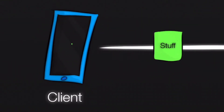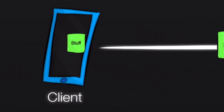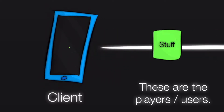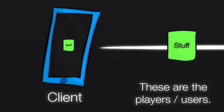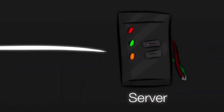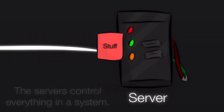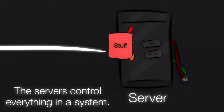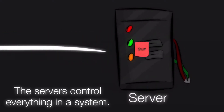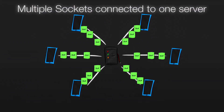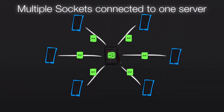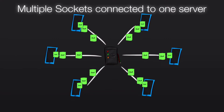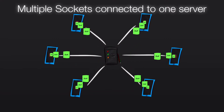Here is a client. Phones, computers, and tablets are all examples of clients — they are guests of a networking system. Here is a server. A server handles all incoming connections and interactions from clients. Servers control the networking system. Multiple sockets can connect to one server and interact with each other. A server is required for Socket.io to work; otherwise, multiplayer will not work in Hyperpad.